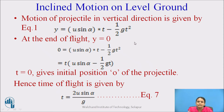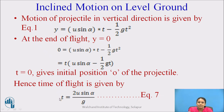The motion of the projectile in the vertical direction is given by Y equals U sine alpha into T minus one-half g T squared. At the end of flight, Y equals zero. Solving this gives T into (U sine alpha minus one-half gT) equals zero. The non-zero solution gives the time of flight as T equals 2U sine alpha divided by g.